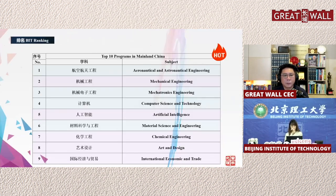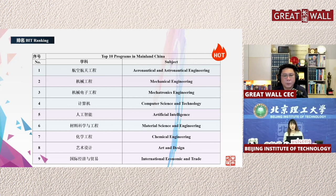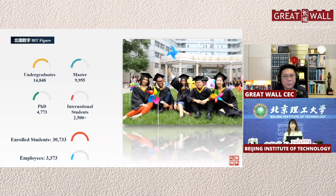First, let's take a look at our programs. We have a lot of programs for international students, but here I'll highlight some programs ranked top 10 in mainland China: aerospace engineering, mechanical engineering, electronic engineering, computer science and technology, artificial intelligence, material science and technology, chemistry engineering, art and design, and international economy and trade. BIT has around 3,000 international students.